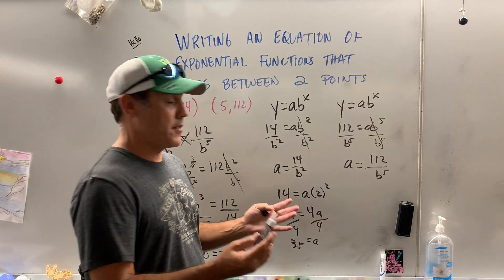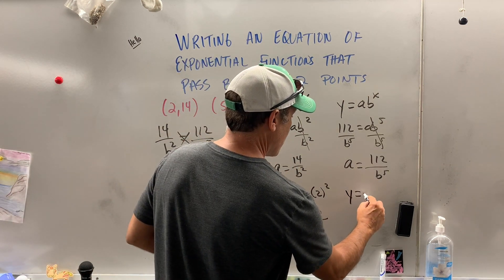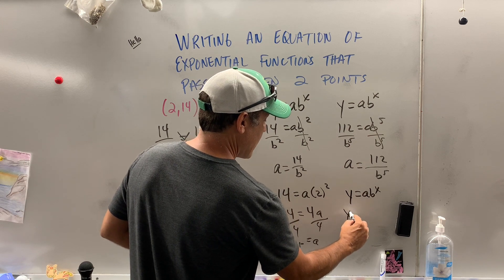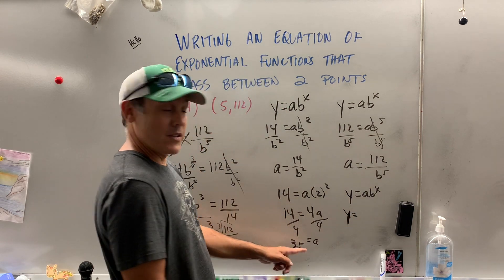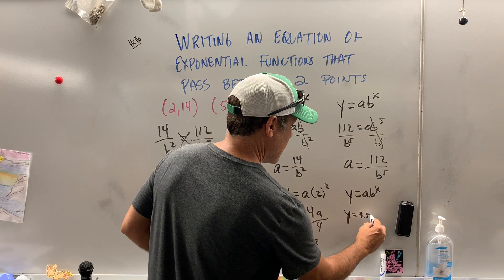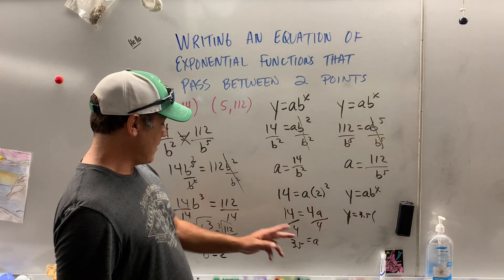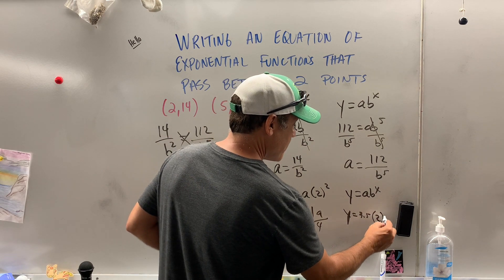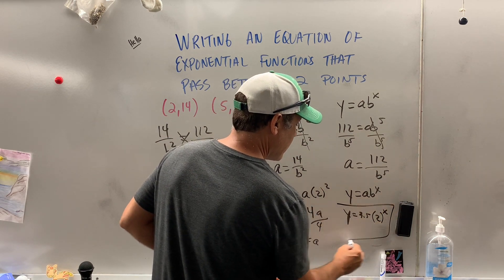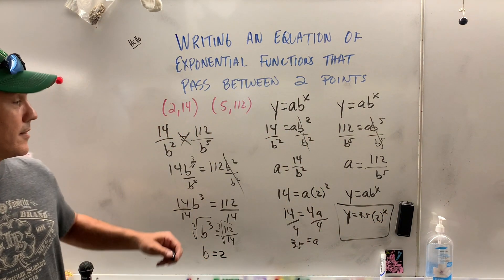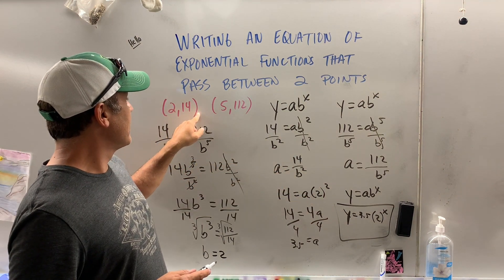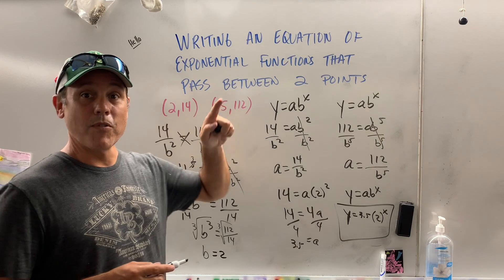So what's my final answer after all this? Well, let's go back to y equals a b to the x. It's y equals, my a value is 3.5. My x is, or excuse me, my b value is 2. So after all that, that's how you can come up with the exponential equation for a function passing between two points you've been given.